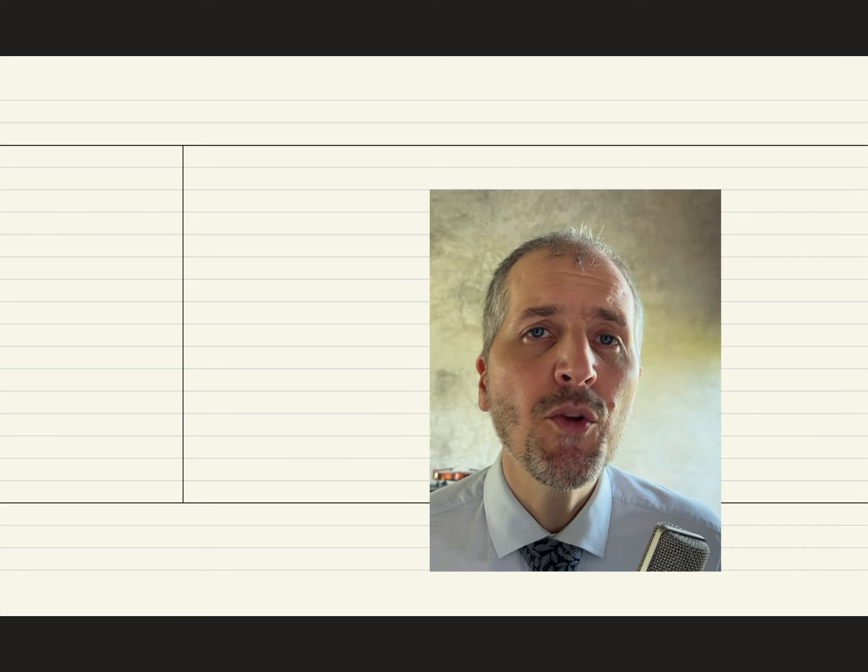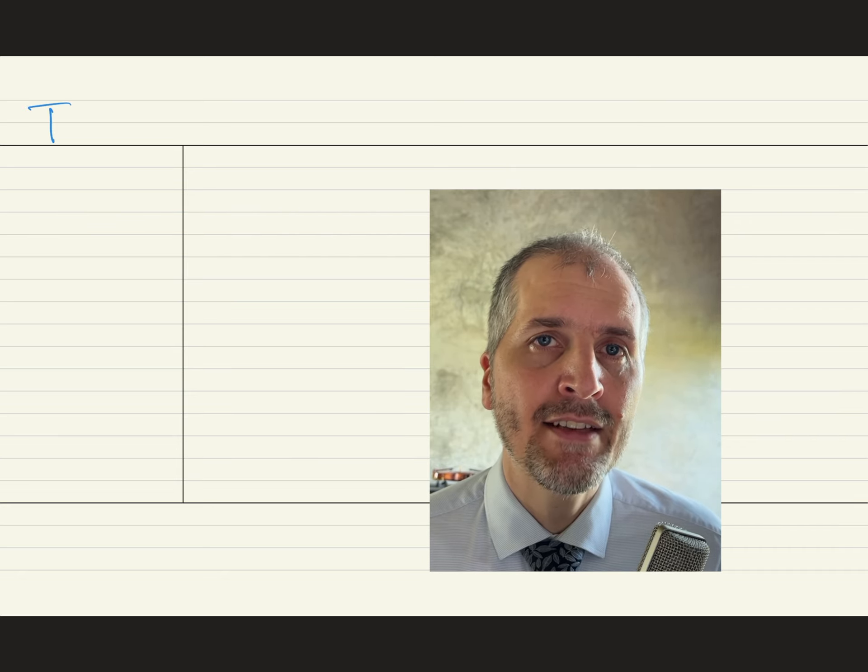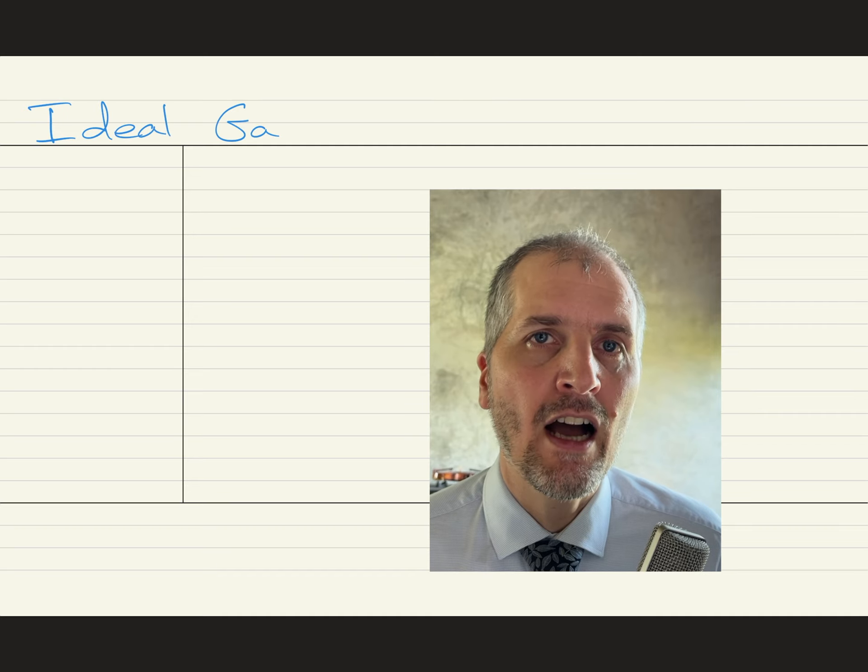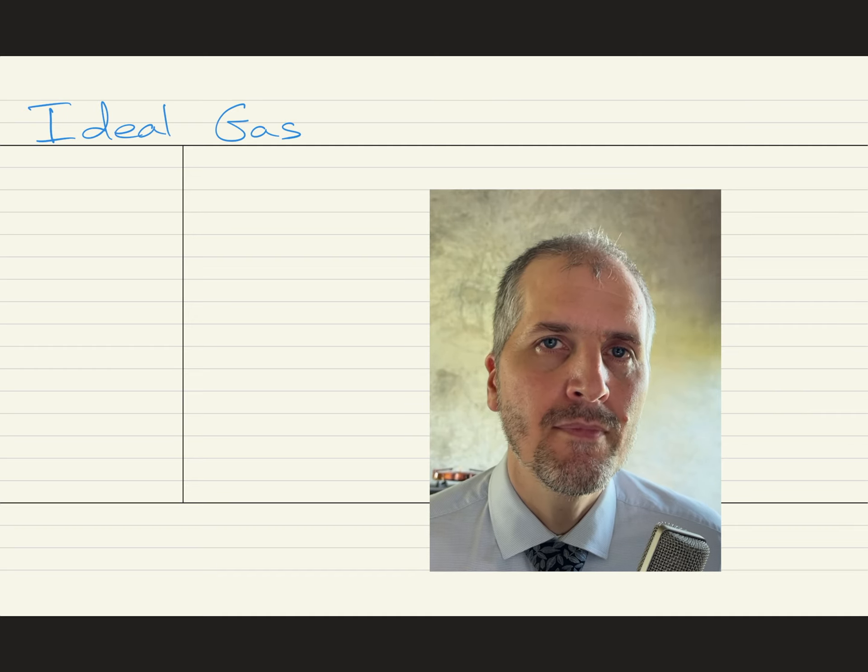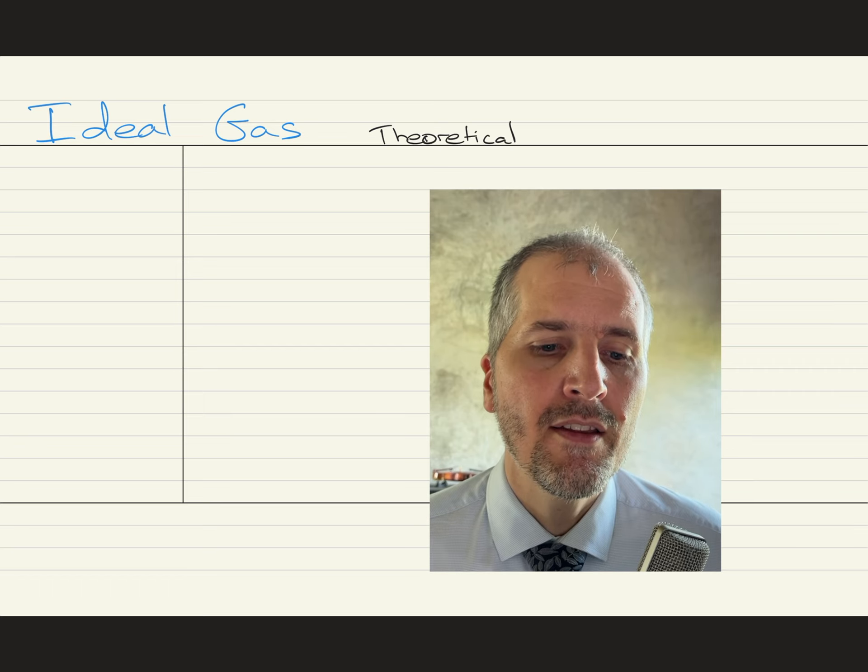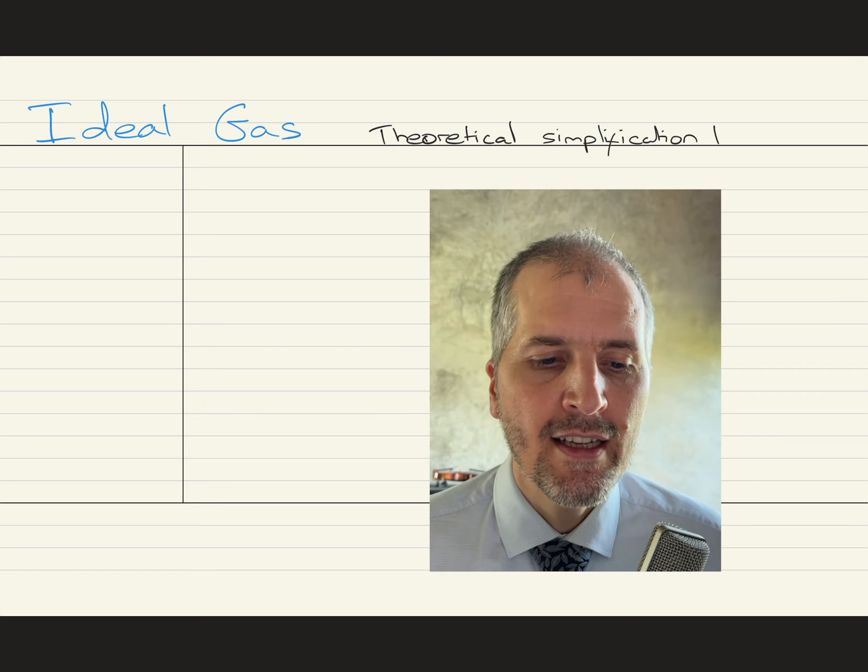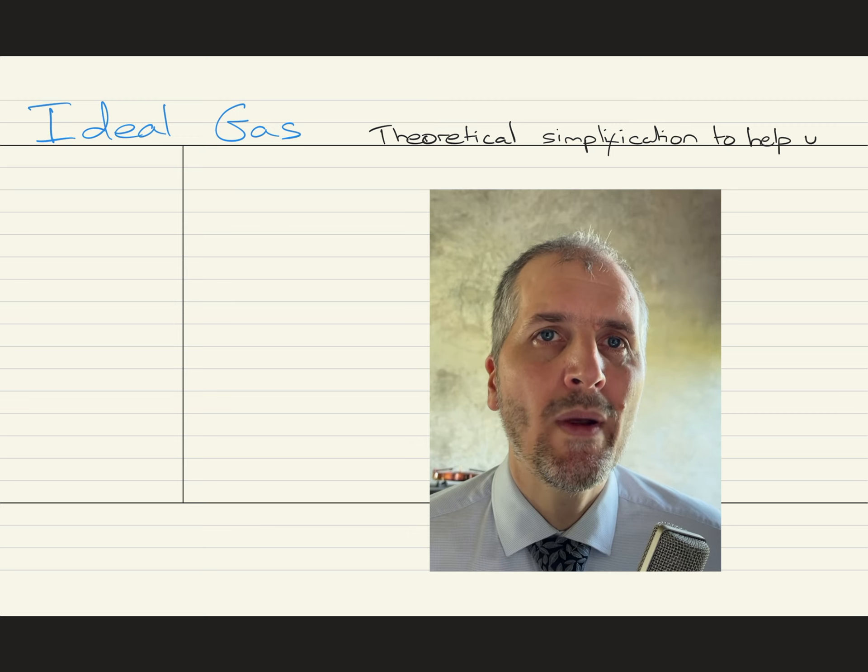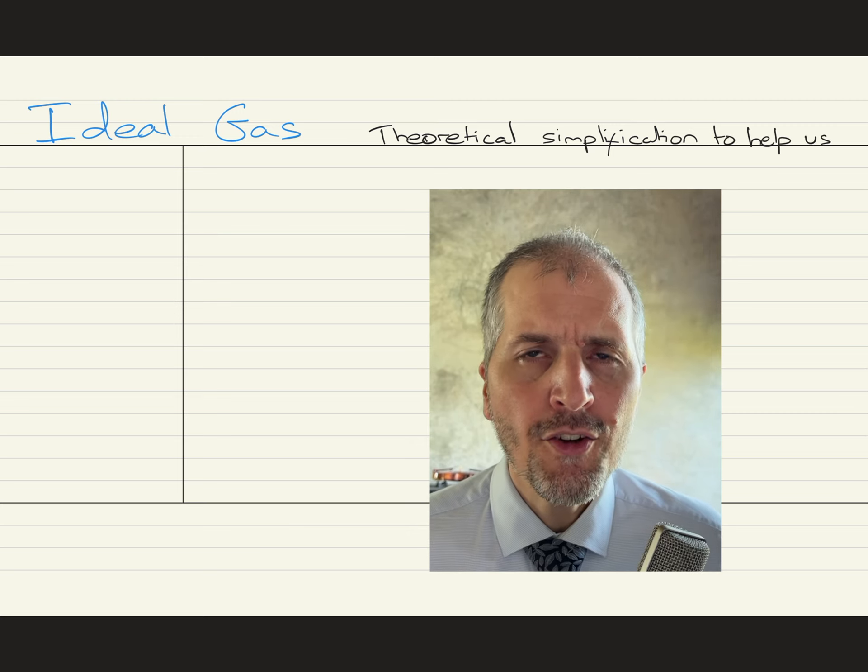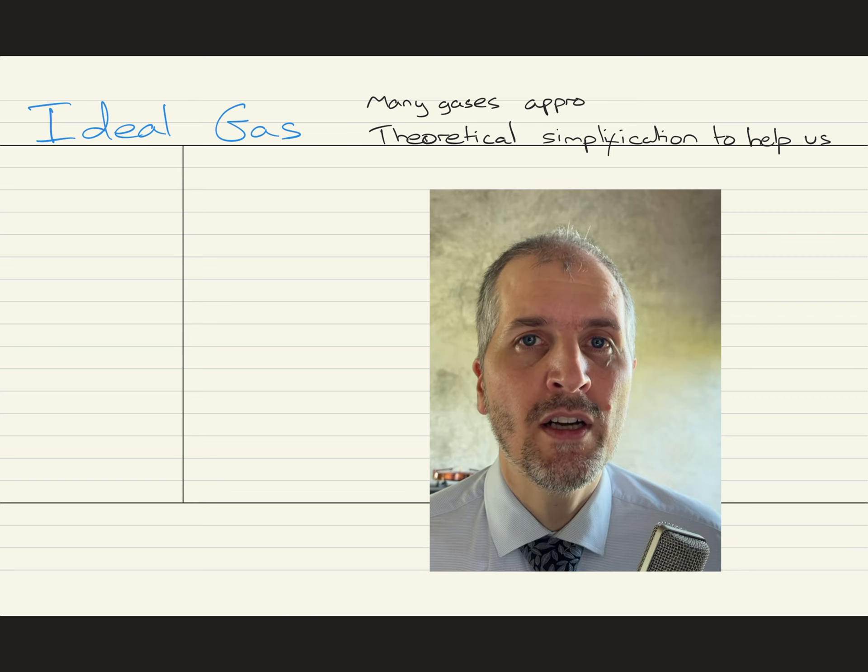In this lesson video, we're going to work our way closer to the kinetic model by trying to understand what is the idea of an ideal gas. Now, an ideal gas is a theoretical idea. It's a simplification that lets us solve problems. In the real world, we don't work with ideal gases, but a lot of the gases we do work with approximate pretty well to an ideal gas.